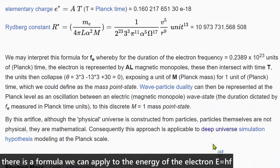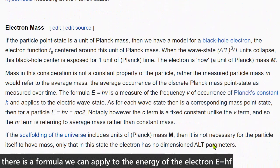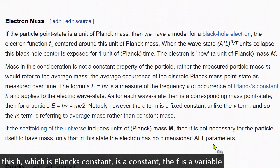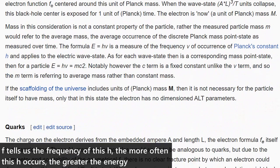There is a formula we can apply to the energy of the electron. E equals HF. This H, which is Planck's constant, is a constant. The F is a variable. F tells us the frequency of this H. The more often this H occurs, the greater the energy.